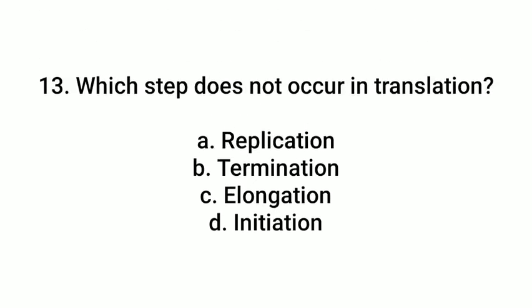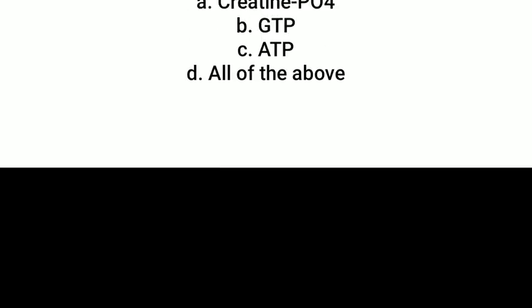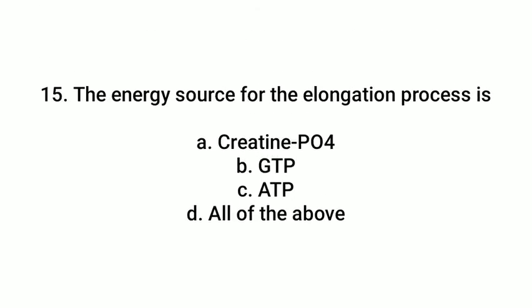Question number 13: Which step does not occur in translation? A, replication. B, termination. C, elongation. D, initiation. Answer: A — replication. Question number 14: What is the energy source for the elongation process? A, creatine phosphate. B, GTP. C, ATP. D, all of them. Answer is B — GTP.